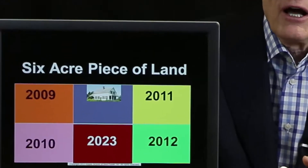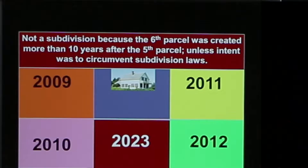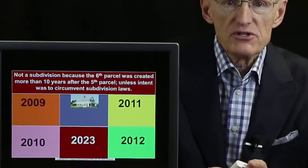There is an exception to the statute: what if you didn't sell that other piece off until 2023? Under Arizona law, it would not be considered a subdivision because the sixth parcel was created more than 10 years after the fifth parcel. Be careful, though, because if there was intent to circumvent the subdivision law by waiting that long, it would be considered a subdivision — but intent is rather difficult to prove.